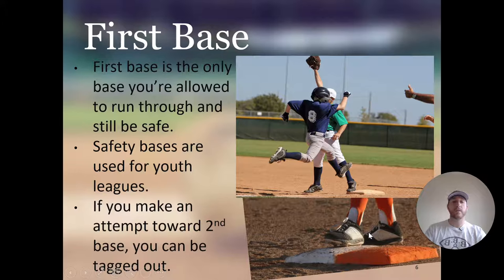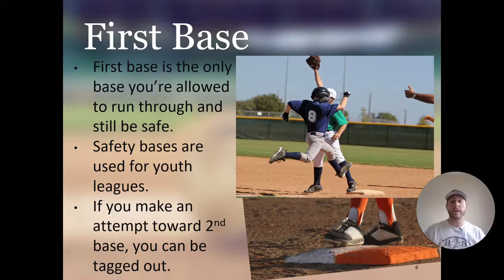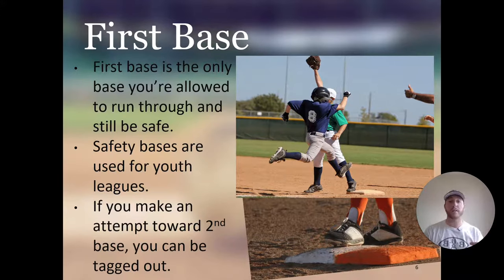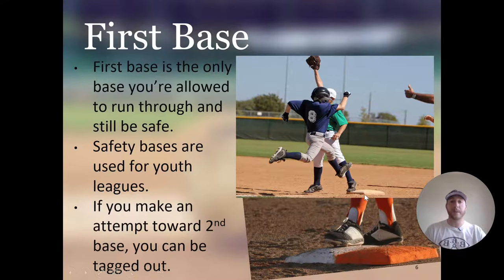If you make an attempt towards second base, you can be tagged out — that's the one time you can be tagged out when you run through first base. If you run through the bag and see an overthrow and make an attempt toward second, you are now a live player and can be tagged. But if you don't make an attempt — you just turn to the side and walk back to first base — you cannot be tagged out. If you make an attempt like you're going to run to second, you have to get back to first, because you are now a live player.